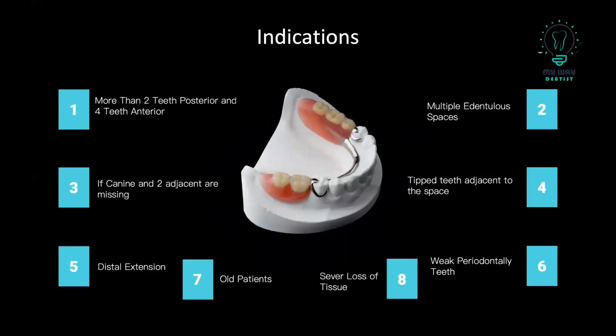So in summary, the indications would include scenarios such as when two posterior teeth are lost or four anterior teeth are lost — go directly for RPD. Another example: when the canine is lost and the two adjacent teeth before or after the canine are also lost, you go for RPD because in these circumstances you cannot apply Ante's law. Another indication is when you have multiple edentulous spaces in the same arch — a space on the right side and left side — the RPD will address both spaces as one treatment.